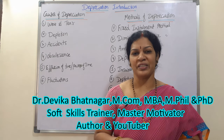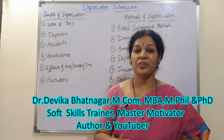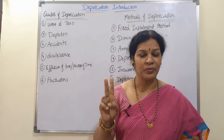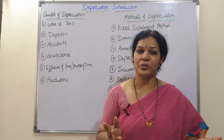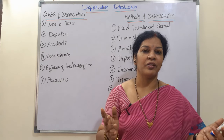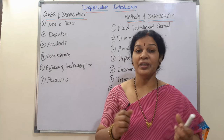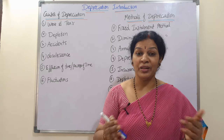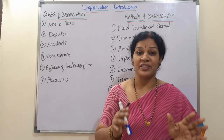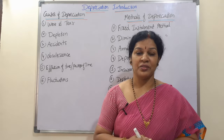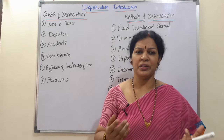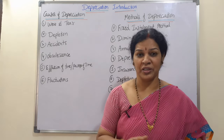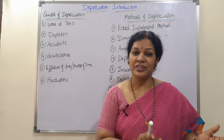Every organization needs a lot of assets to run the organization smoothly. These assets are divided into two parts: fixed assets and fluctuating assets. Fixed assets are those which cannot be movable — like furniture, building, machinery, and land. Fluctuating assets are movable, like raw materials and other purchased materials.